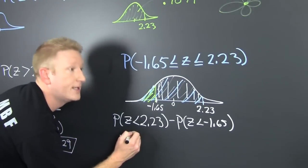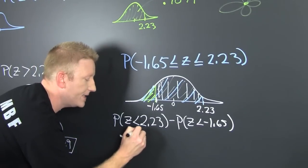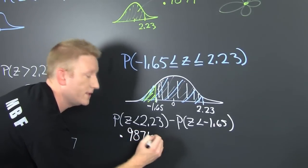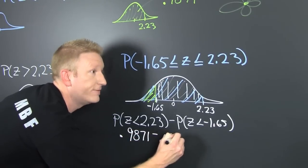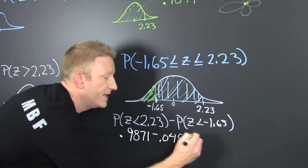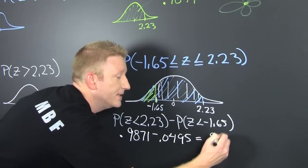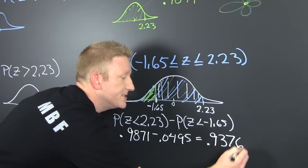So this is 0.9871 minus 0.0495, and the difference is 0.9376.